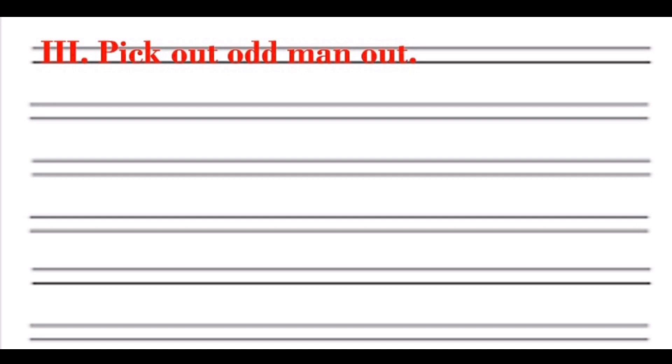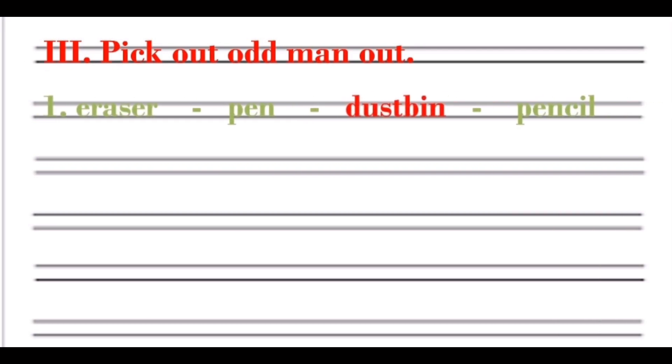Next activity: pick odd man out. Odd man out means identifying the word that doesn't belong. Set 1: eraser, pen, dustbin, pencil. In this sequence, odd man out is dustbin.